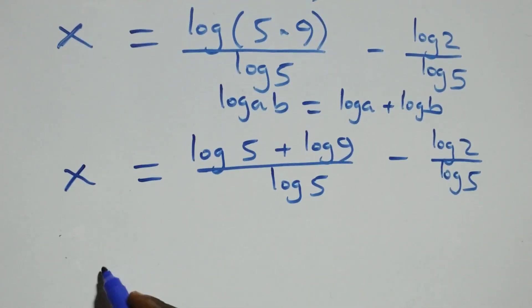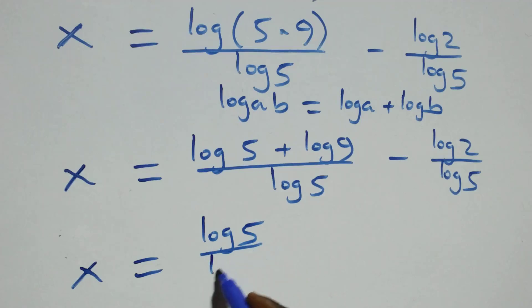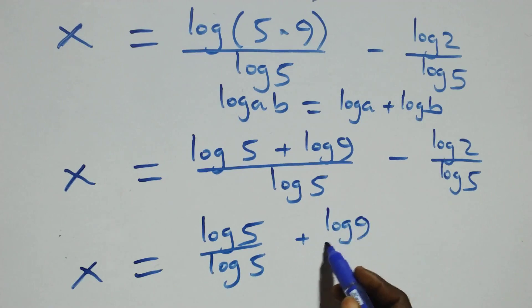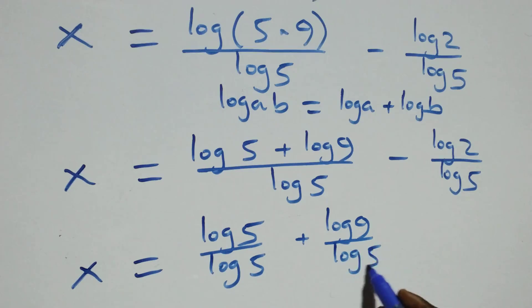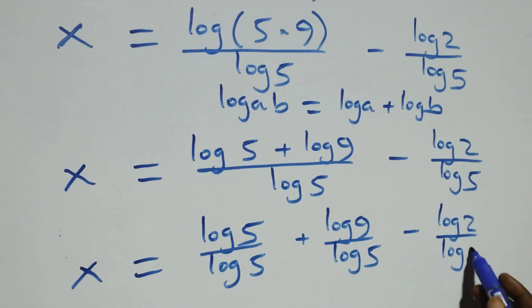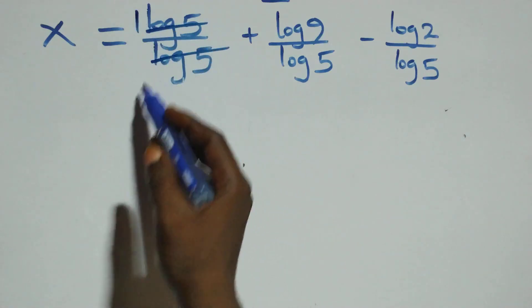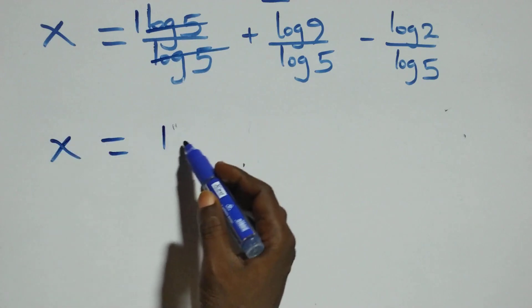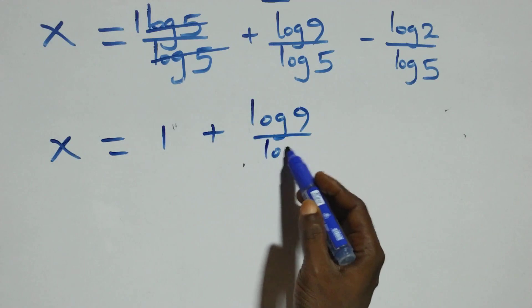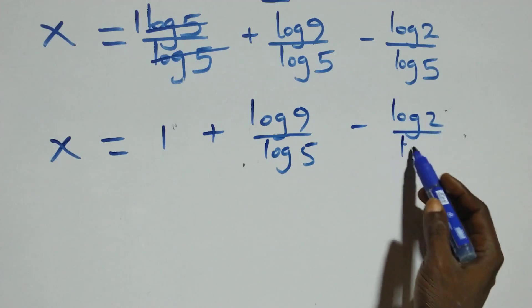From here we separate into two fractions: x equals log 5 over log 5 plus log 9 over log 5 minus log 2 over log 5. Log 5 cancels with log 5 on the left fraction, leaving x equals 1 plus log 9 over log 5 minus log 2 over log 5.